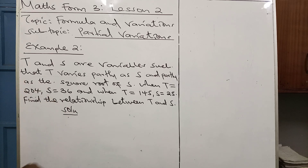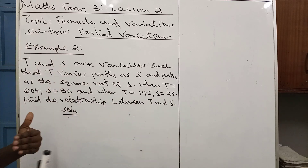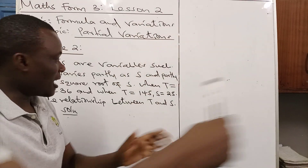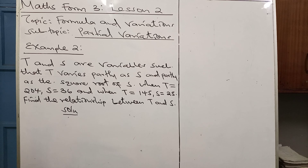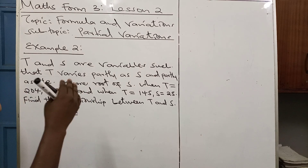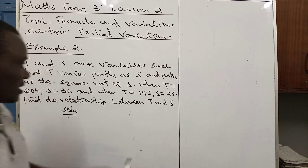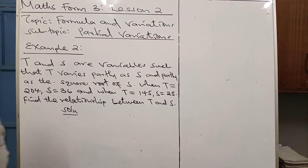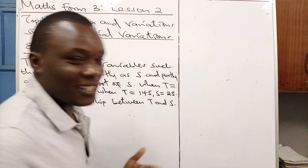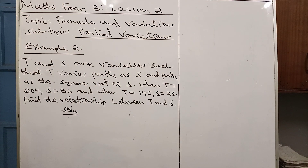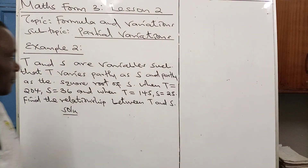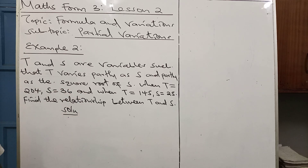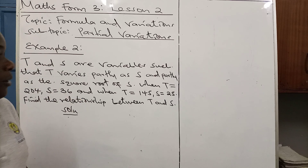When a student finds a statement saying a certain quantity varies partly as and partly as something else, how do students need to understand that statement? It means that when you get this kind of statement saying that there is a quantity that varies partly as S and partly as S, we are going to form an equation having two constants, and both of those constants are going to have variables.